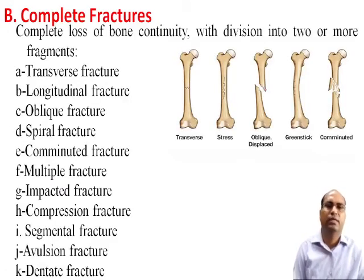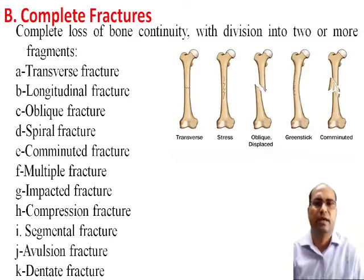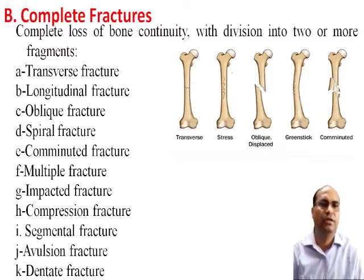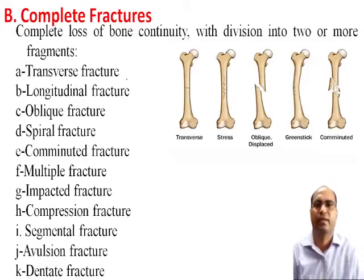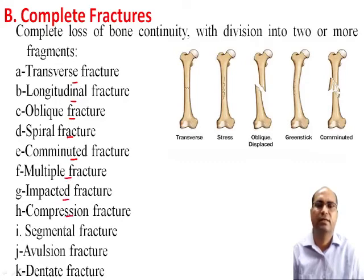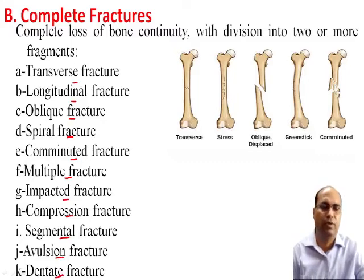A complete fracture involves complete loss of continuity with division into two or more fragments. Under this there may be transverse fracture, longitudinal fracture, oblique fracture, spiral fracture, comminuted fracture, multiple fracture, impacted fracture, compression fracture, segmental fracture, avulsion fracture, and dentate fracture. We will discuss these one by one.